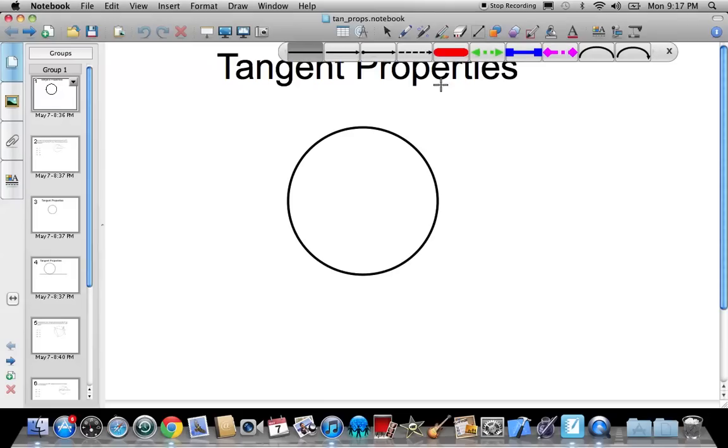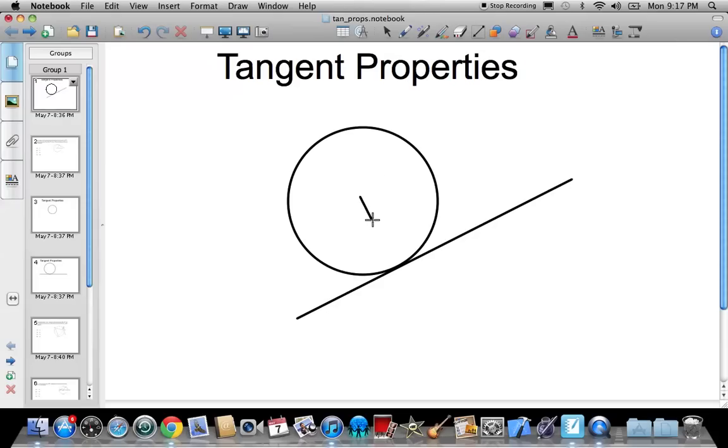The first one is if we have a tangent line - a tangent line touches the circle exactly one point, so here's our tangent line. And then if you have a radius that intersects that tangent line, so here's my radius, comes through, meets at the point of tangency, what ends up happening is you get a 90 degree angle formed here. So if a radius intersects a tangent point, you get a 90 degree angle that's formed. This is really one of the most important tangent properties.